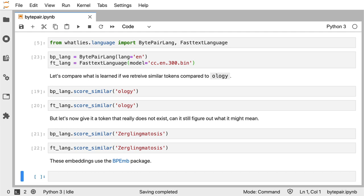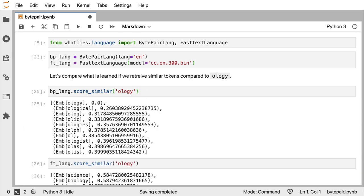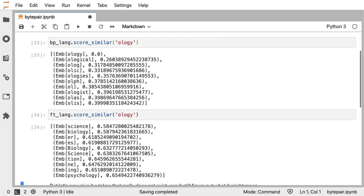So the first thing that I figured would be fun to check is to say, well let's take this ology as a word and let's give that to the byte pair embedding language as well as the fast text language, and let's just check what vectors are the most similar if we were to give this as a query.